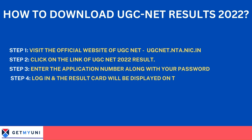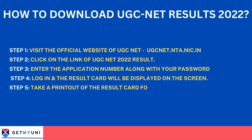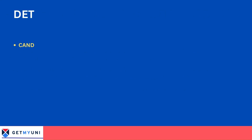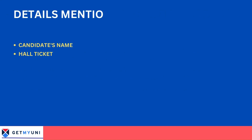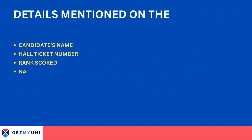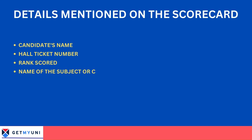Step 4: Log in and then the result card will be displayed on the screen. Step 5: Take a printout of the result card for future reference. Step 6: Candidates can check the below information, which will be available in the UGC Net 2022 scorecard.